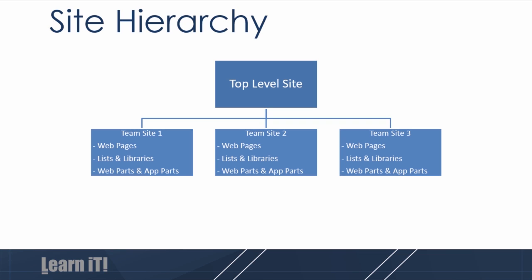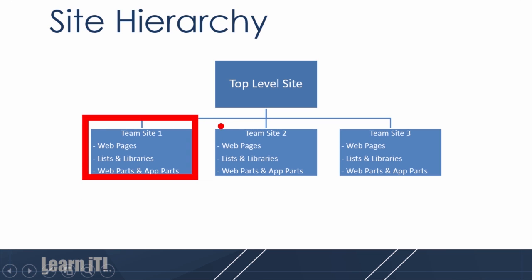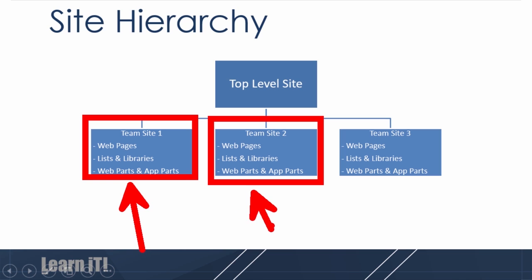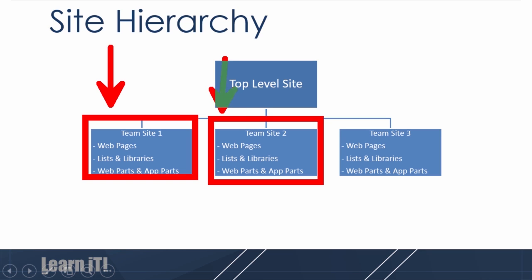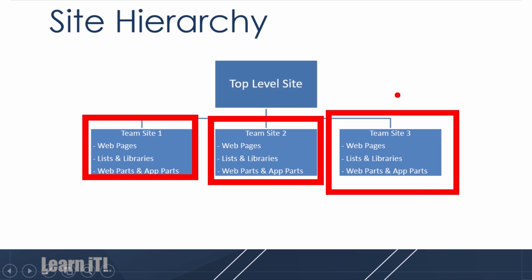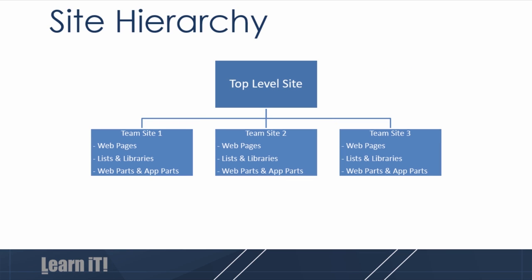These sub-sites have their own pages, lists, libraries, web parts, and app parts — they're self-contained representations of their own subject matter. Generally when you see sub-sites, they are of different subjects, which necessitated their own collections. For example, this could be the HR site, the finance site, or the sales site. Sub-sites are no different than the top-level site, except in where they exist in the hierarchy. When it comes to the data they store, sites are self-contained environments.